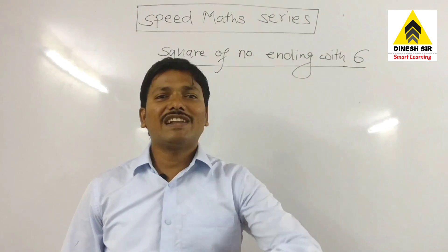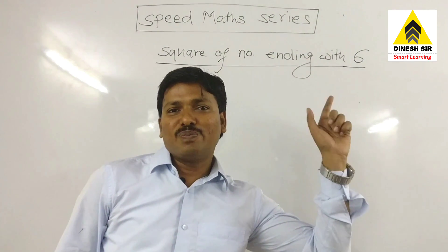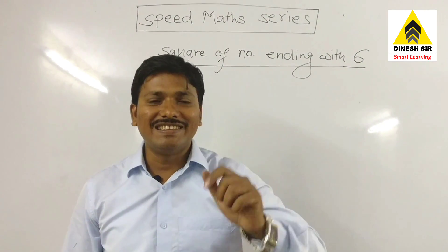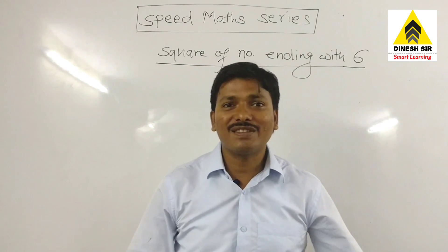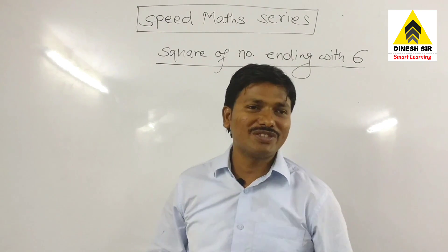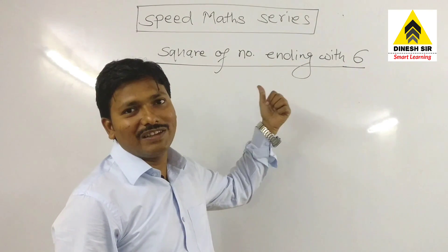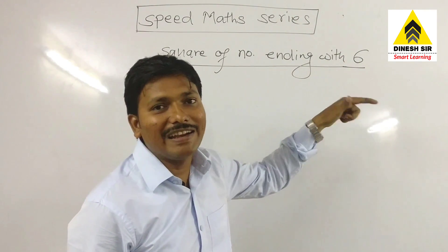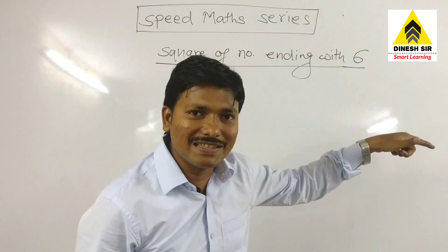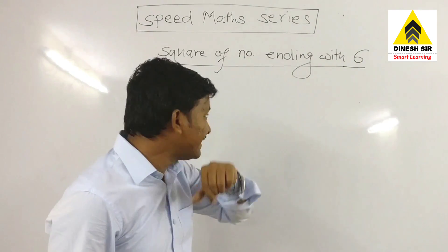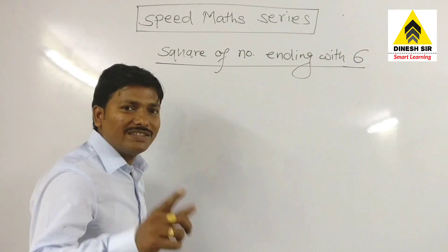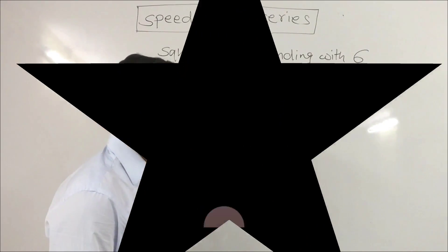Hello friends, we are learning the speed math series. In this, we are going to see the square of any number which is ending with 6. So let's see what is the shortcut technique.